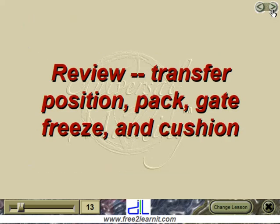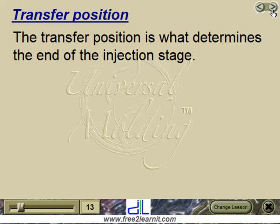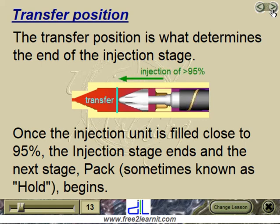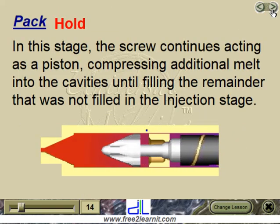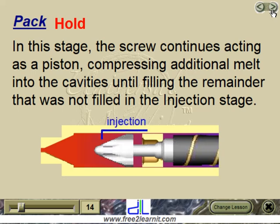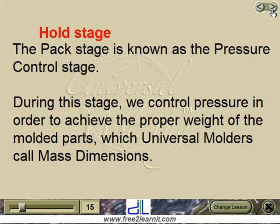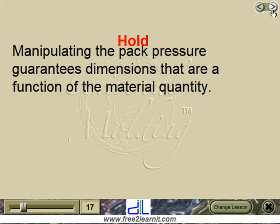Transfer position is what determines the end of the injection stage. Once the injection unit is filled close to 95%, the injection stage ends and the next stage — pack, sometimes known as hold — begins. In the pack stage, the screw continues acting as a piston, compressing additional melt into the cavities until filling the remainder not filled in the injection stage. Pack is known as the pressure control stage. During this stage, we control pressure to achieve the proper weight of the molded parts, which universal molders call mass dimensions. Mass dimensions are only a function of the quantity of material and should not be confused with dimensions that are the effect of shrinkage.